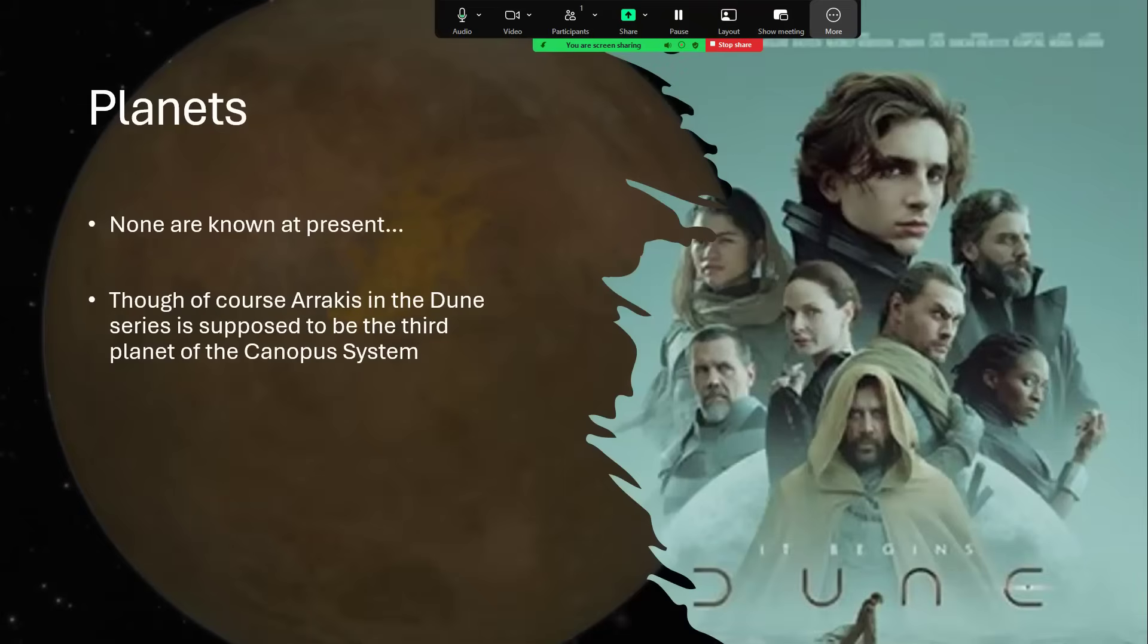And I haven't mentioned planets, because although we don't know of any real planets, I've saved this till the end, because Canopus is supposed to be the home of the planet Arrakis in the Dune series.